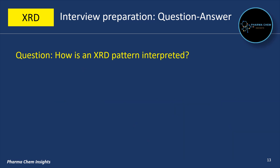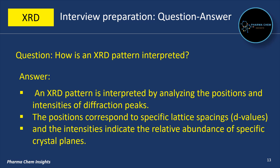Next question: how is an XRD pattern interpreted? An XRD pattern is interpreted by analyzing the positions and intensities of diffraction peaks. The positions correspond to specific lattice spacings (d-values) and the intensities indicate the relative abundance of specific crystal planes.